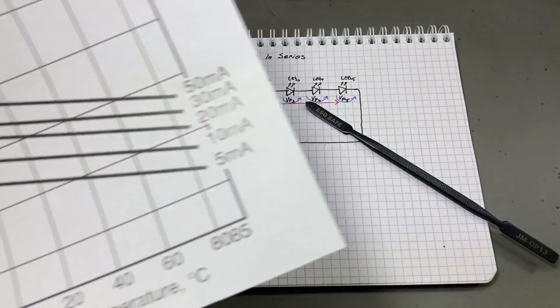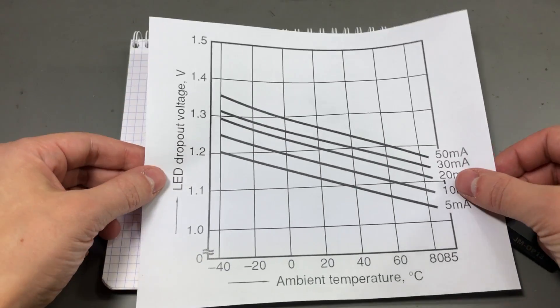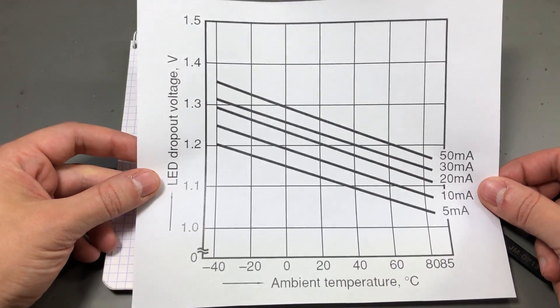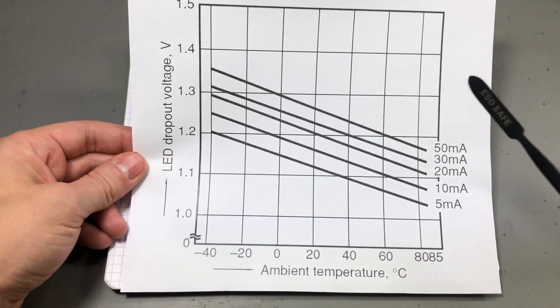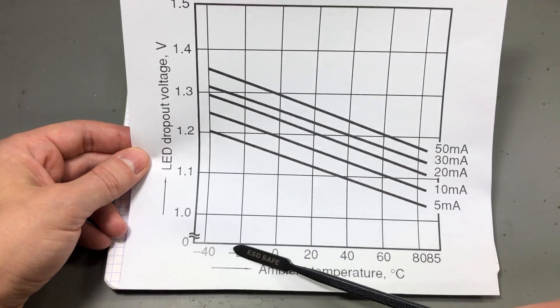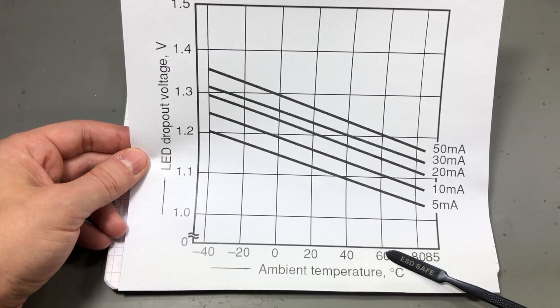And the property states that the forward voltage of an LED will decrease with an increase in temperature. And as you can see here on the left we have the forward voltage and we can see it decreases as you increase the temperature.